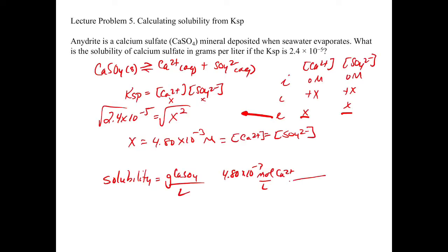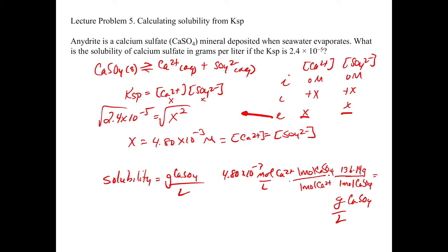We first convert to moles of solute: for every 1 mole of calcium 2+, there is 1 mole of calcium sulfate. That makes this easier because we have a one-to-one stoichiometry. And then for every 1 mole of calcium sulfate, we use the molecular weight, which is 136.14 grams. We wind up with units of grams per liter of calcium sulfate, and when you do the math, you get 0.67 grams per liter. So our solubility is 0.67 grams of calcium sulfate per liter.